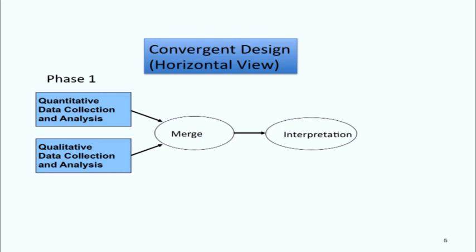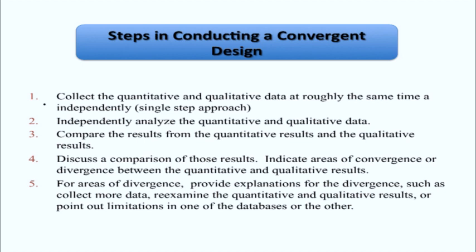This design can be drawn vertically or more horizontally — it doesn't make a lot of difference, I've seen them drawn both ways. The steps in conducting a convergent design — there are just five of them. First, we collect both quantitative and qualitative data typically at roughly the same time. We analyze both databases independently and then bring the results together. We compare the quantitative and qualitative results to see if the two pictures of our problem converge or diverge.